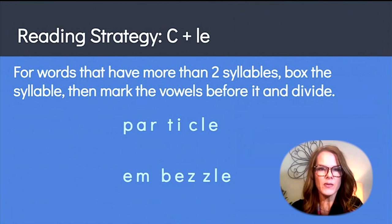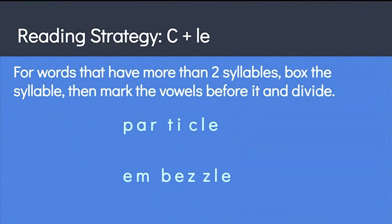Now for words that have more than two syllables, after boxing the final syllable, look at the part before it, and if there's more than one vowel, mark the vowels and divide the word according to the syllable division patterns. So for this word, we're going to box and say the sound of CLE, CUL. Then we will mark our vowels, mark the consonants between, and divide between the consonants. EMBEZZLE, EMBEZZLE, EMBEZZLE.